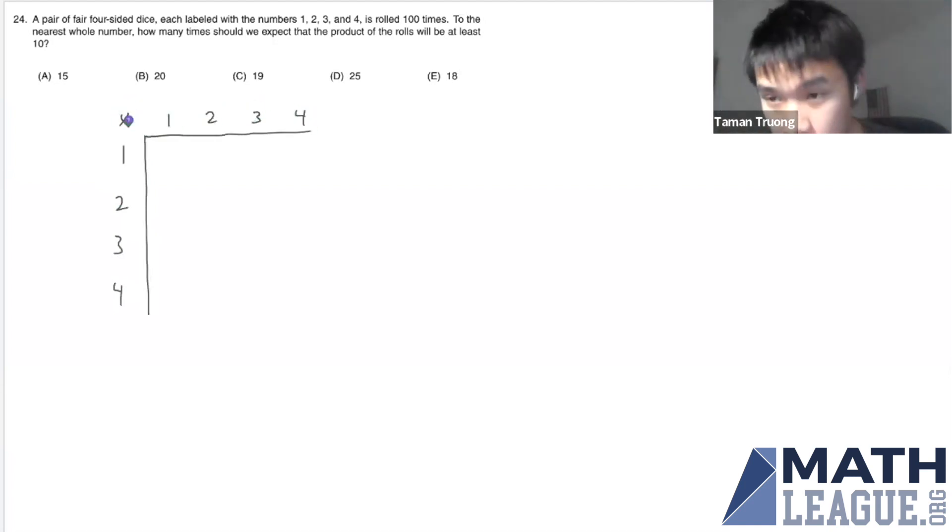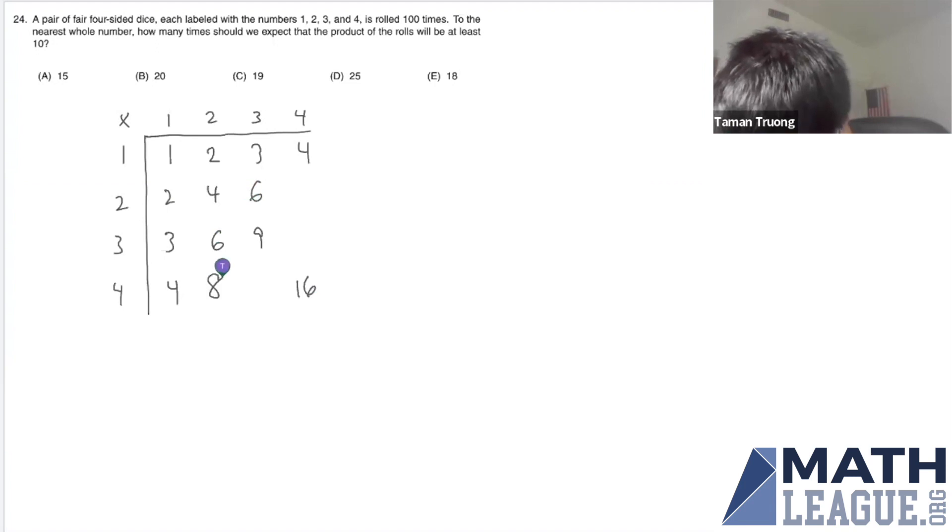Let's just multiply these numbers together. These are just one-digit numbers. You get 1 here, 2, 2, 3, 3, 4, 4. Fill in the diagonal: 4, 9, 16. Here we have 6, 6, 8, 8, and 12, 12.